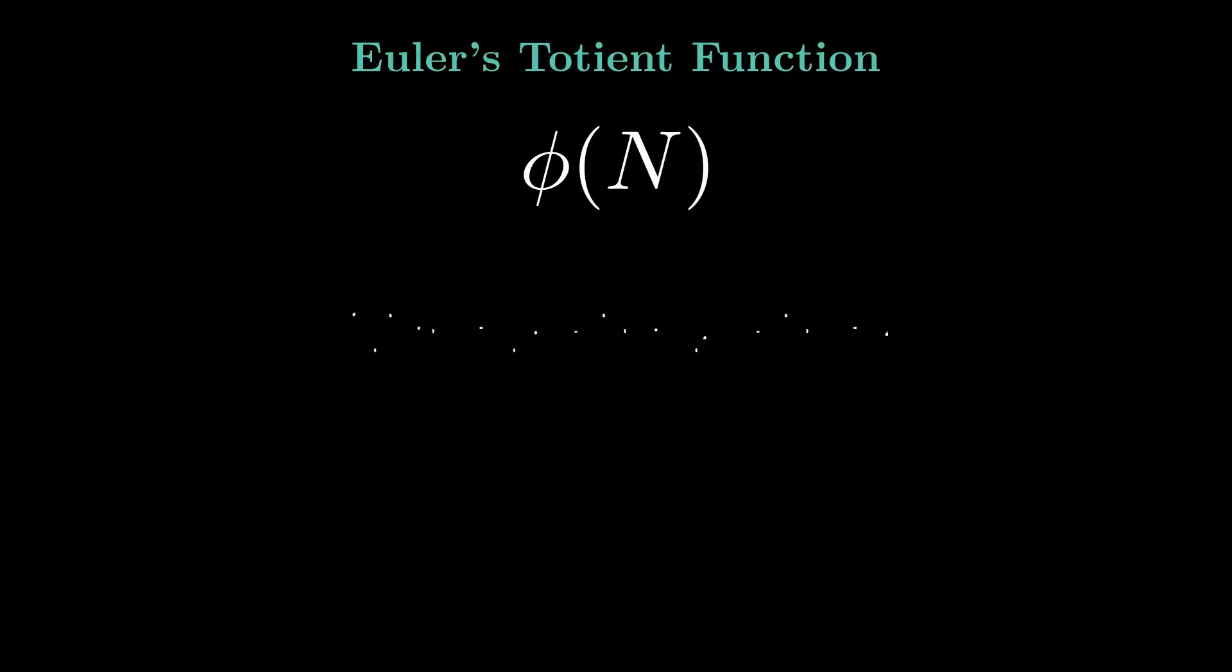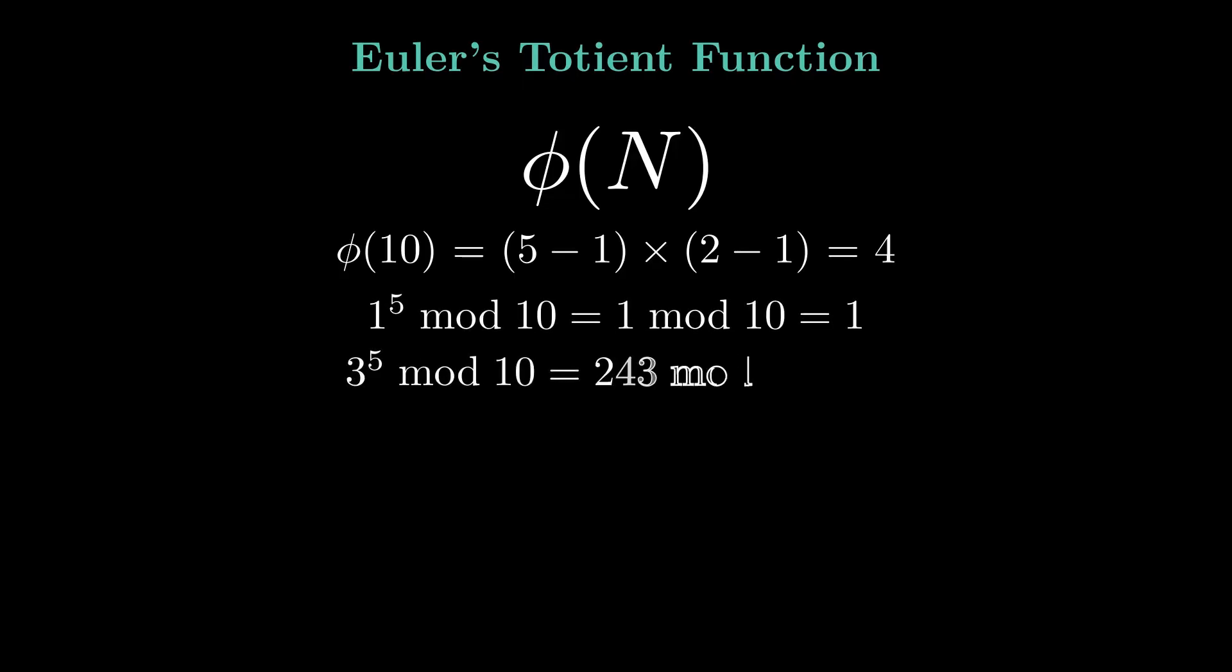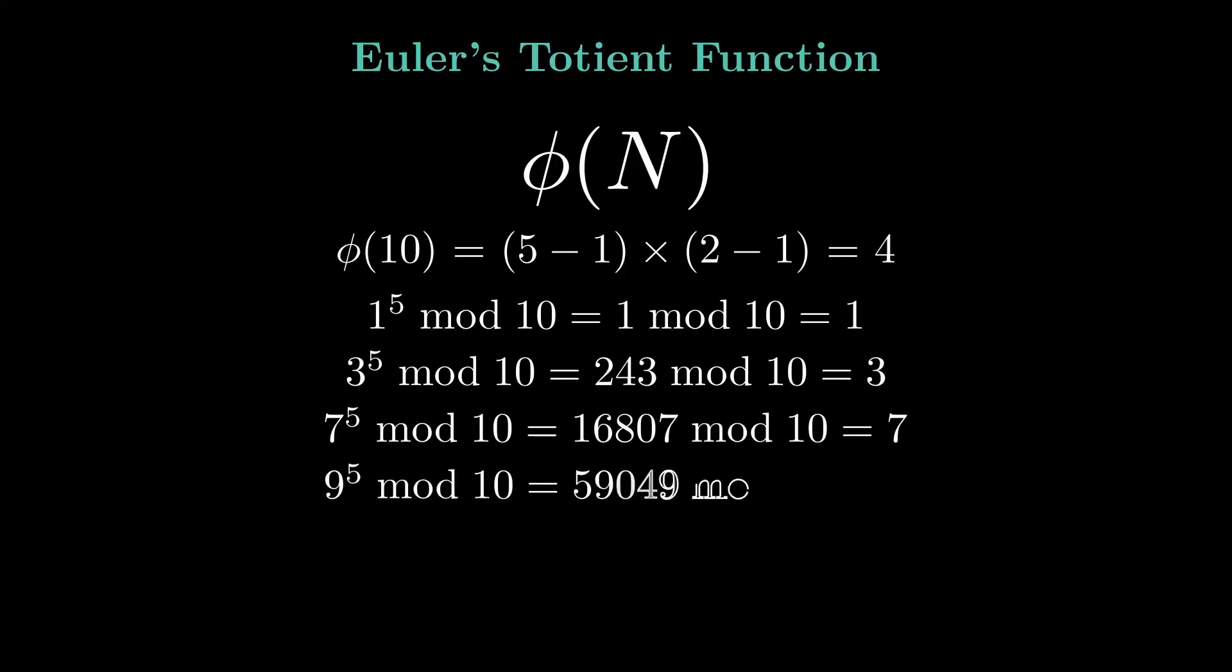The number 10 can be factored as the product of 2 and 5, where 2 and 5 are distinct primes. φ(10) equals 4, which means there are 4 integers less than 10 that are coprime with 10: 1, 3, 7, and 9.